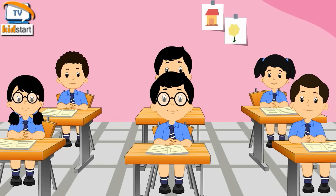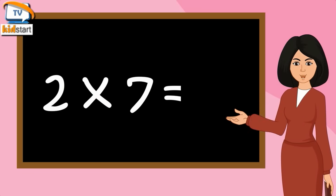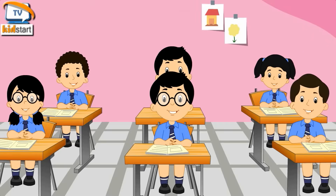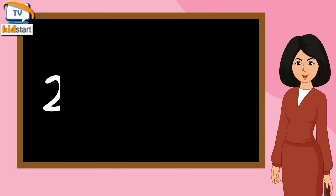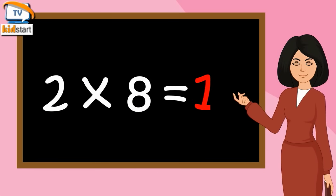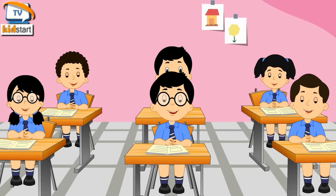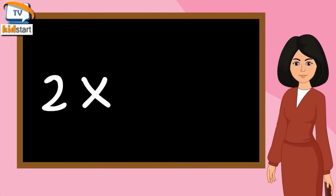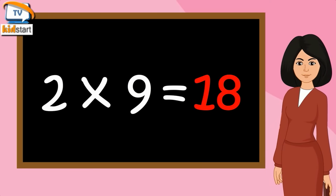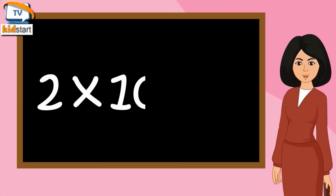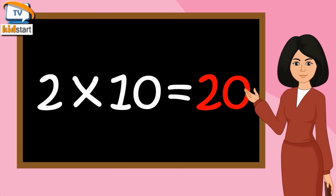Two Sixes are Twelve. Two Sevens are Fourteen. Two Eights are Sixteen. Two Nines are Eighteen. Two Tens are Twenty.